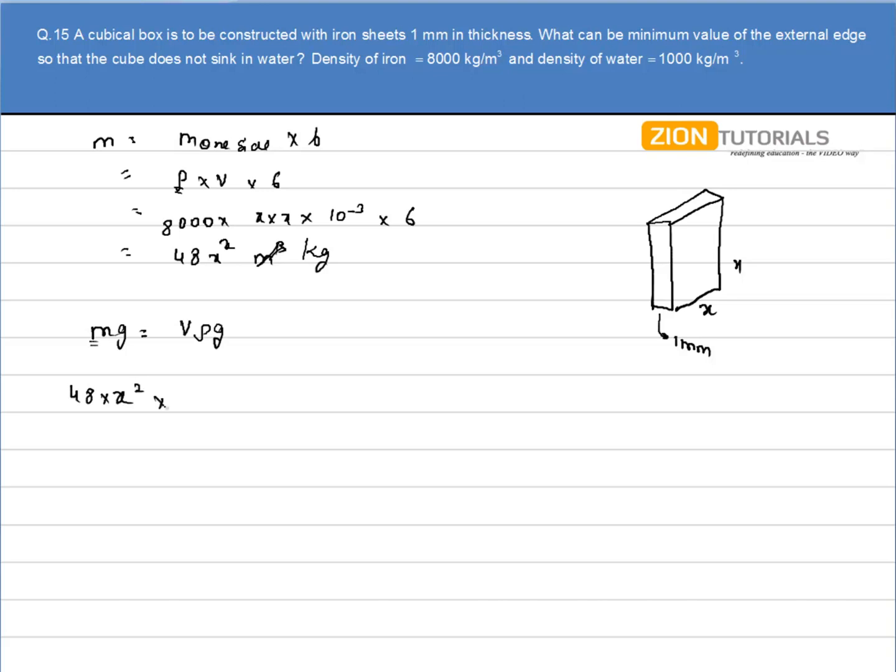Times g, 9.8, equals the volume of the whole cube, x³, times water density, 1000, times g. 9.8 gets cancelled. The value of x comes out to be 48 divided by 1000 meters, which is 4.8 centimeters. That is the answer.